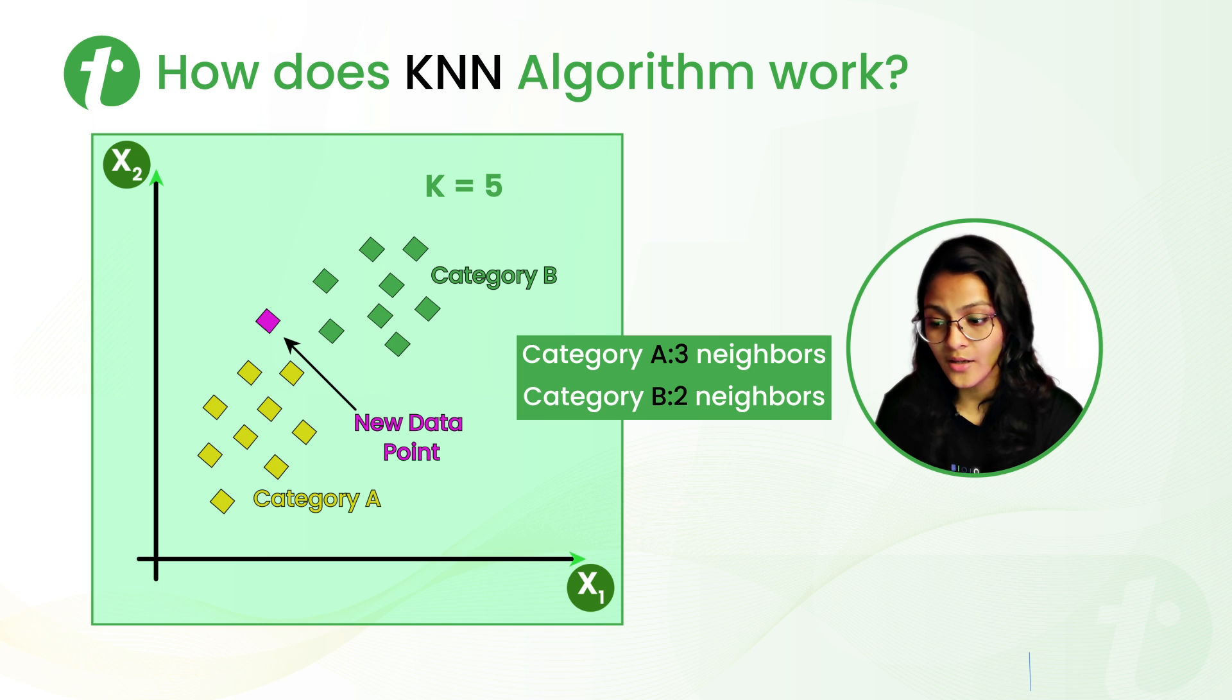we can observe that we have three neighbors from category A and two neighbors from category B. That means this new data point belongs to category A.